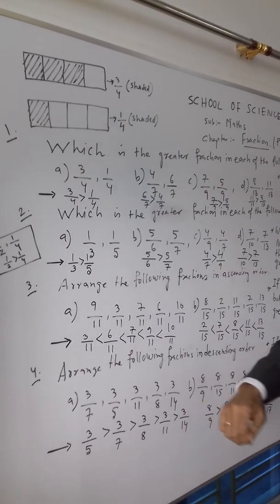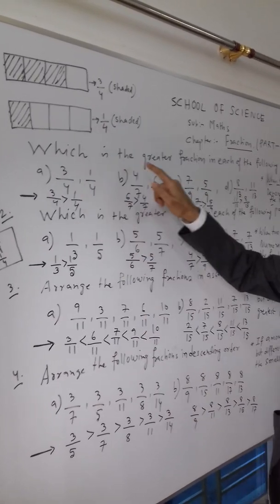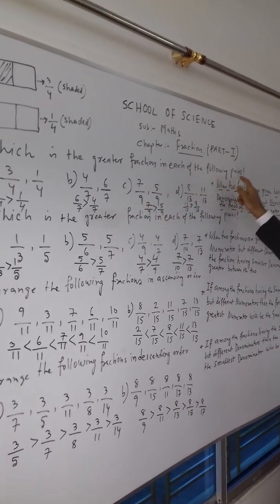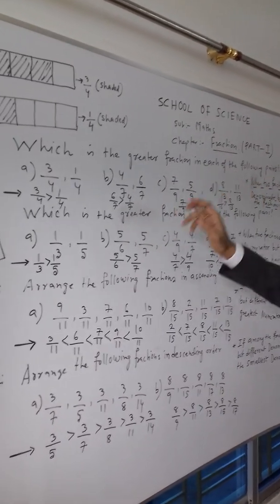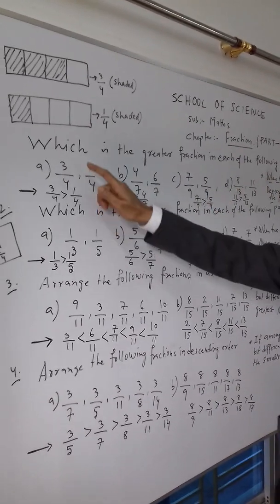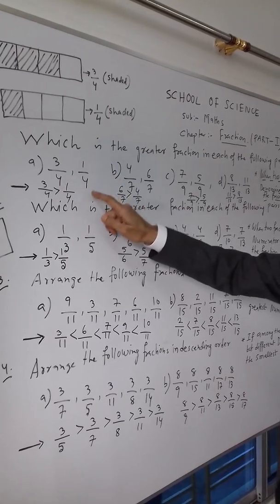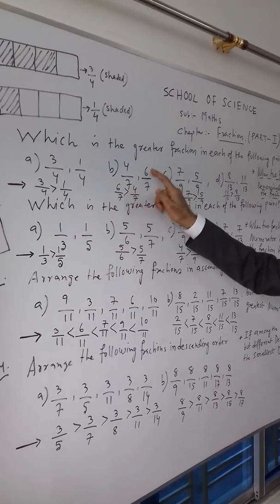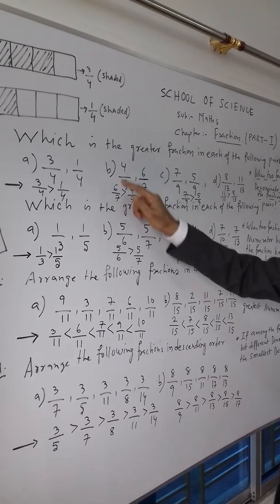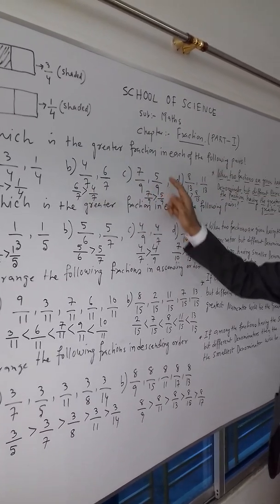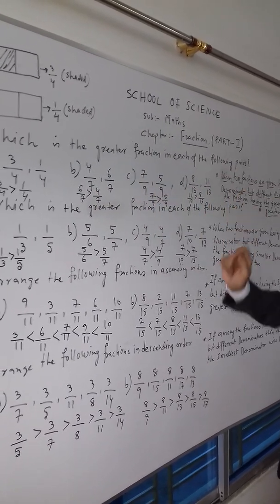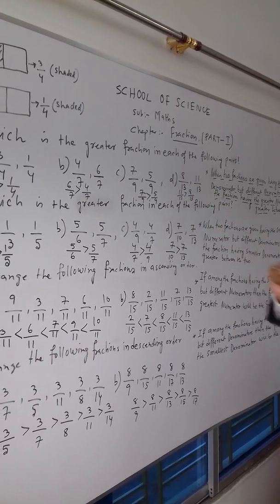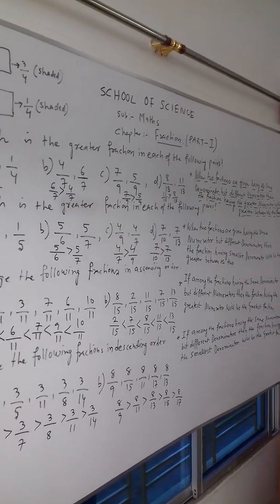Questions now. Which is the greater fraction in each of the following pairs? Out of 3 by 4 and 1 by 4, which one is greater? 4 by 7 and 6 by 7, which one is greater? 7 by 9 and 5 by 9, which one is greater? 8 by 13 and 11 by 13, which one is greater? Now just concentrate.